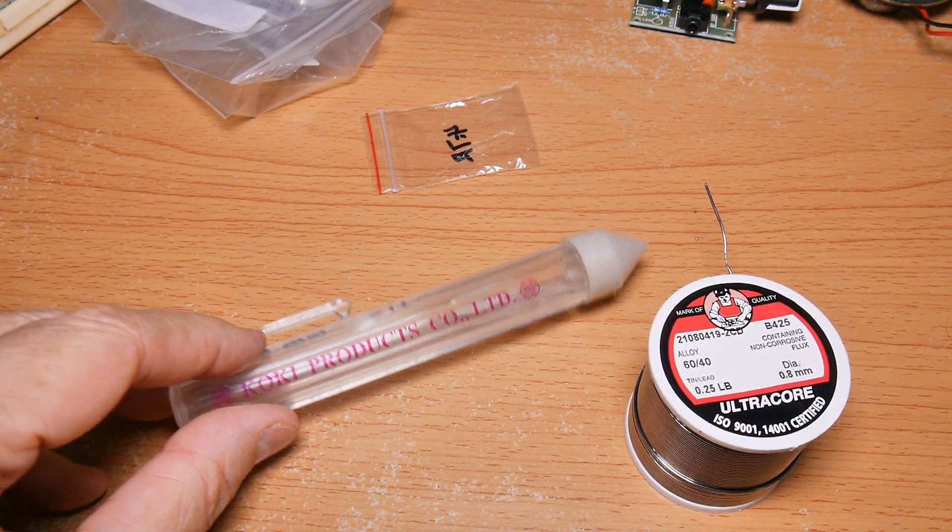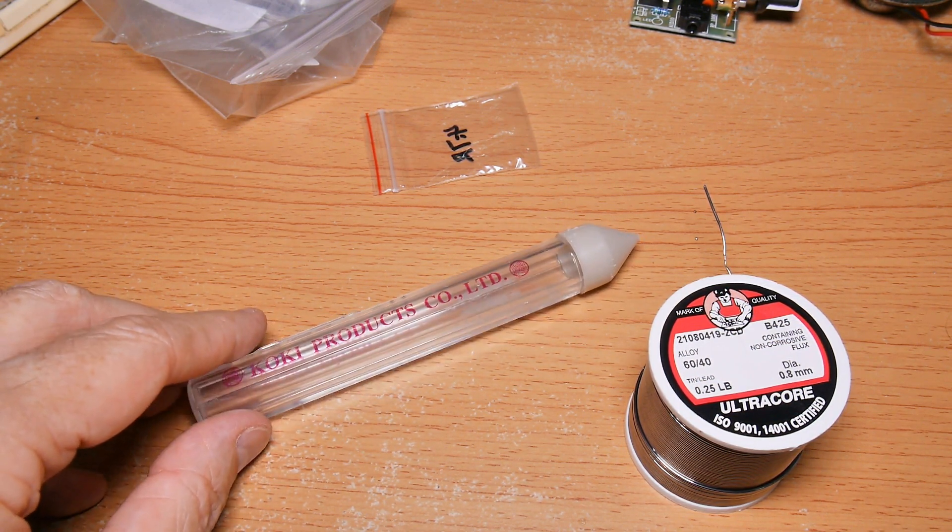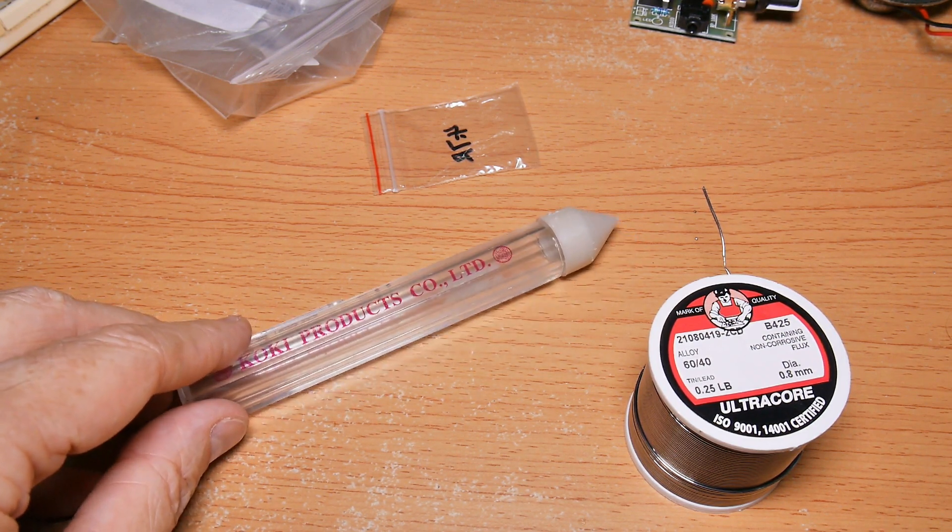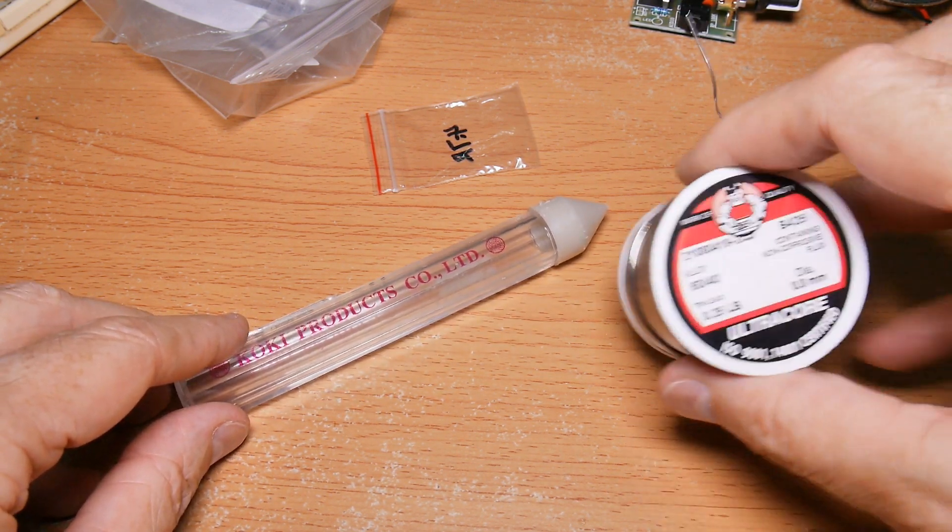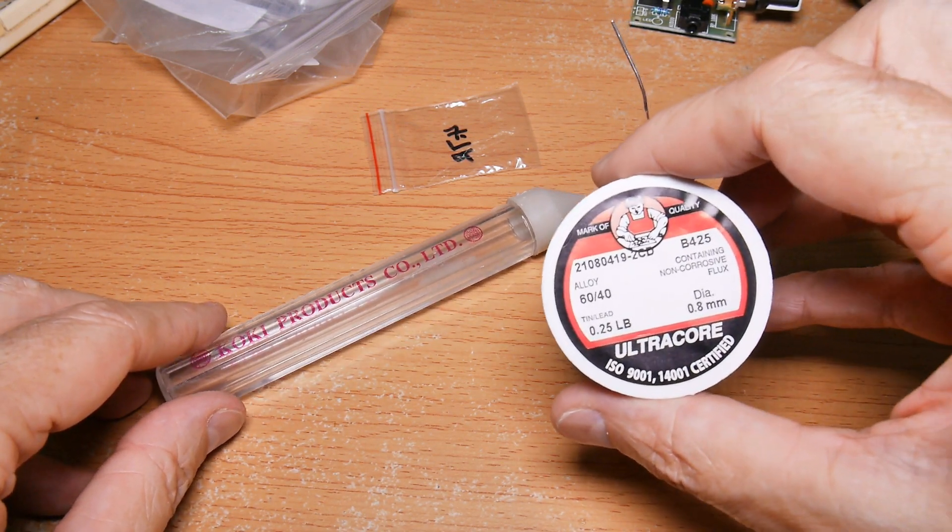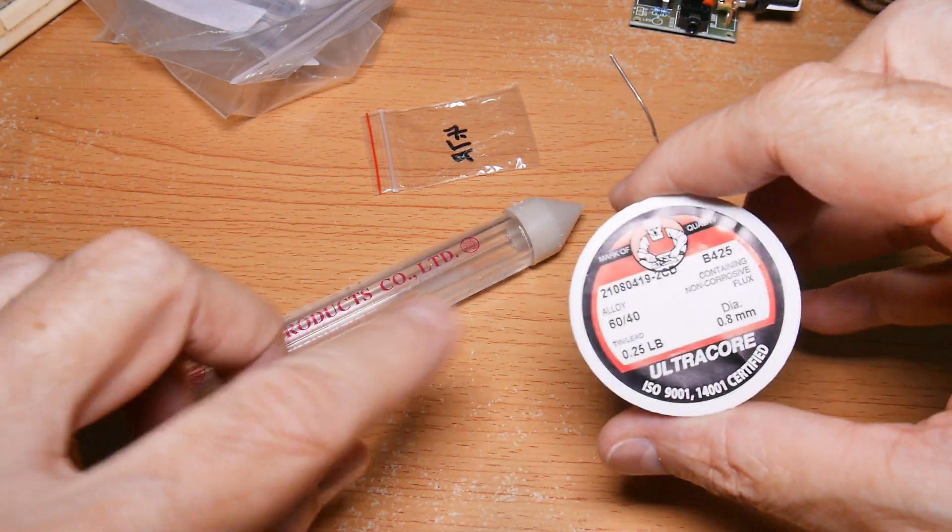The first thing is we have to have one of these tubes, which means we probably had to go out and buy the expensive solder the first time around. We've used it all up now, so we go out and buy the same thing in bulk solder. This is 0.8 millimeters, the same tin-lead, exactly the same solder.